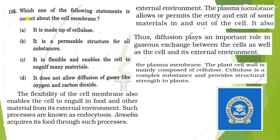Next: which one of the following statements is correct about the cell membrane? Option one: it is made up of cellulose — no. Option two: it is a permeable structure for all substances — no, it is not permeable for all substances. Option three: it is flexible and enables the cell to engulf many materials — yes, this is true. Option four: it does not allow diffusion of gases like oxygen and carbon dioxide — no, it allows, otherwise how would the cell get oxygen for its activities? It is made up of cellulose — no. So the answer should be option C.